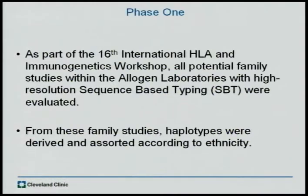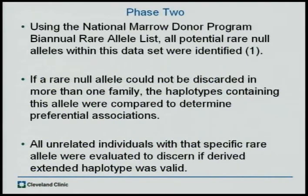This study was part of the 16th International HLA and Immunogenetics Workshop. Through that, we used the Allergen Laboratory's high-resolution sequence-based typing samples and looked at family studies. From these family studies, haplotypes were derived and assorted according to ethnicity. We then used the National Marrow Donor Program biannual rare allele list and compared what we found to see if we had any rare null alleles. If we found a rare null allele, we then determined these associations.